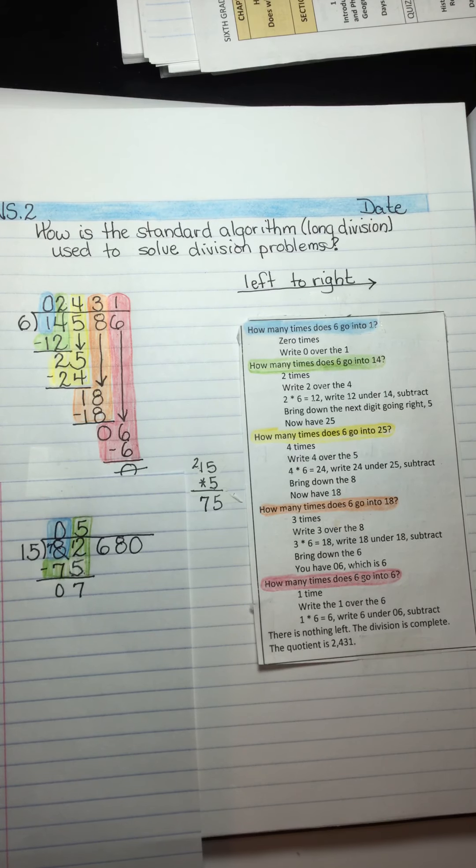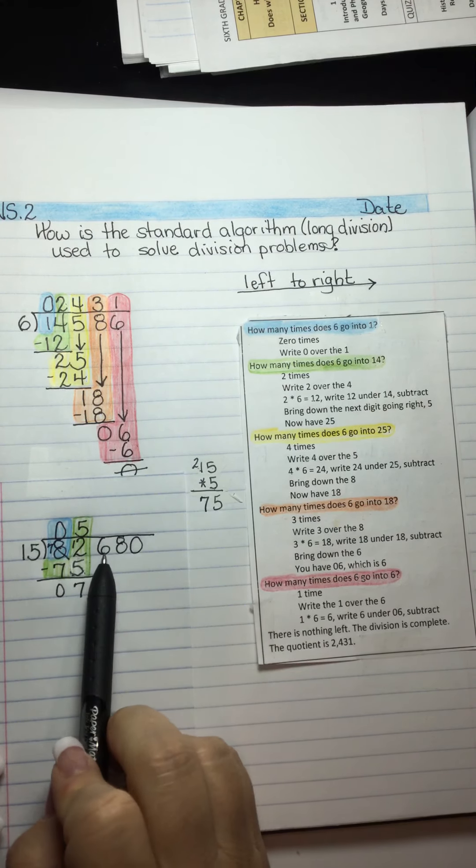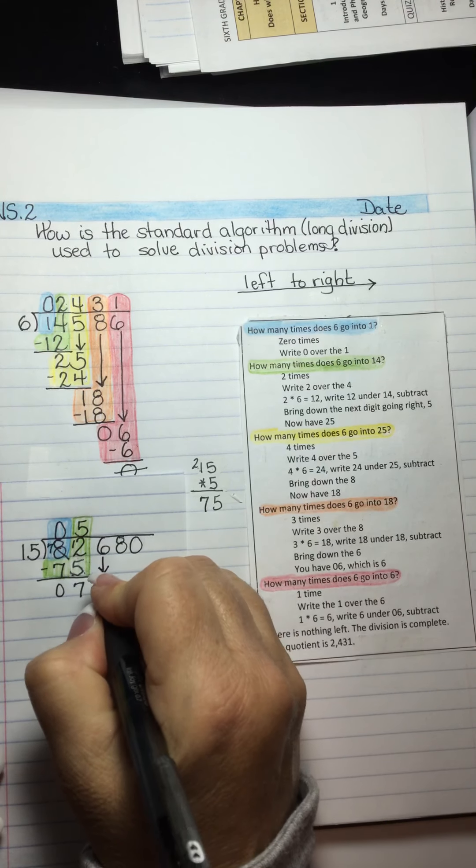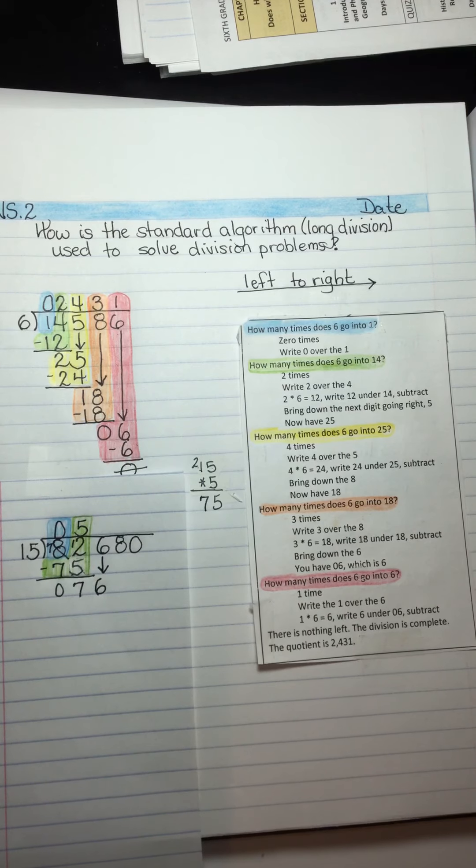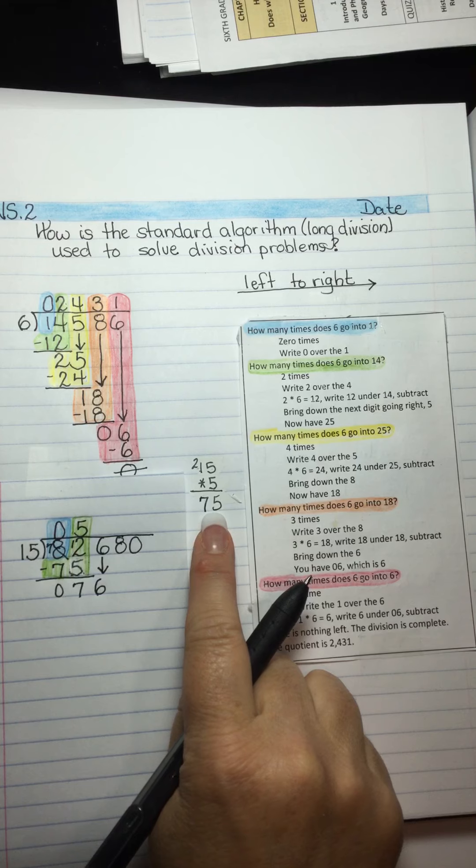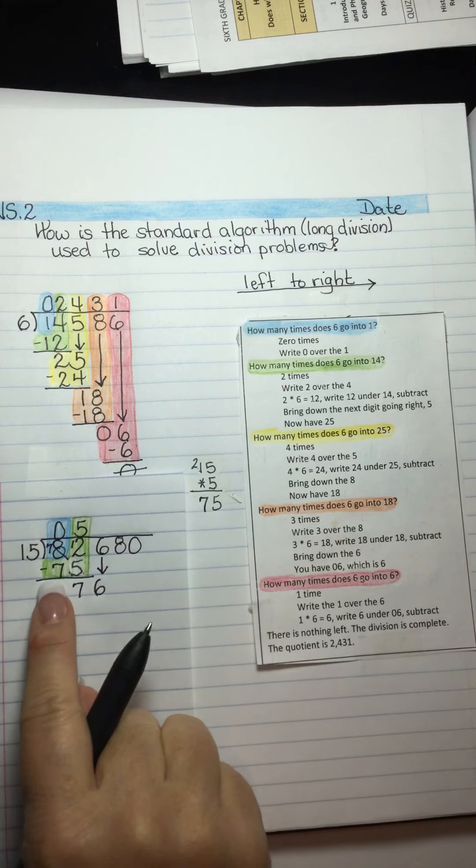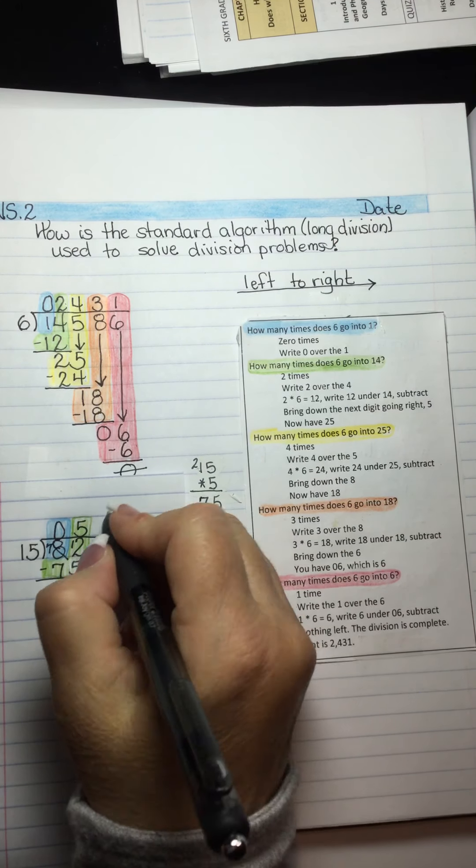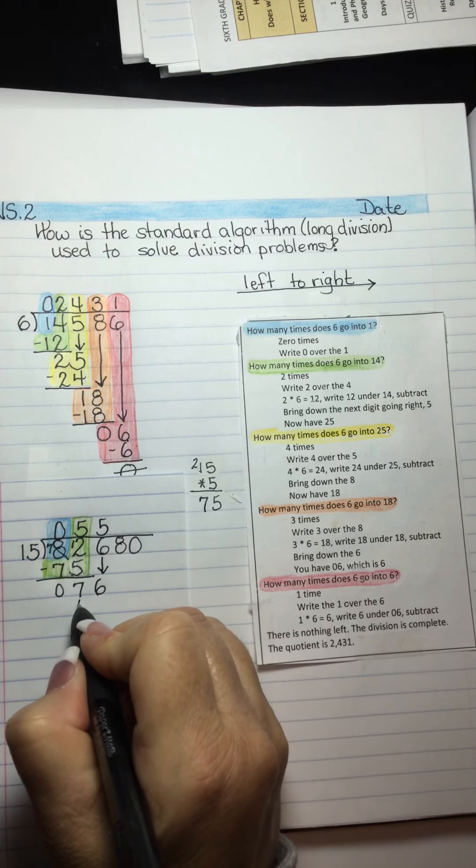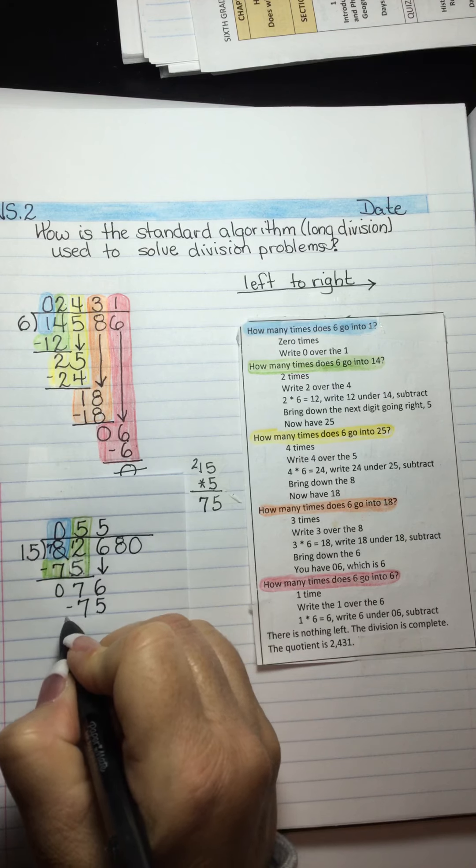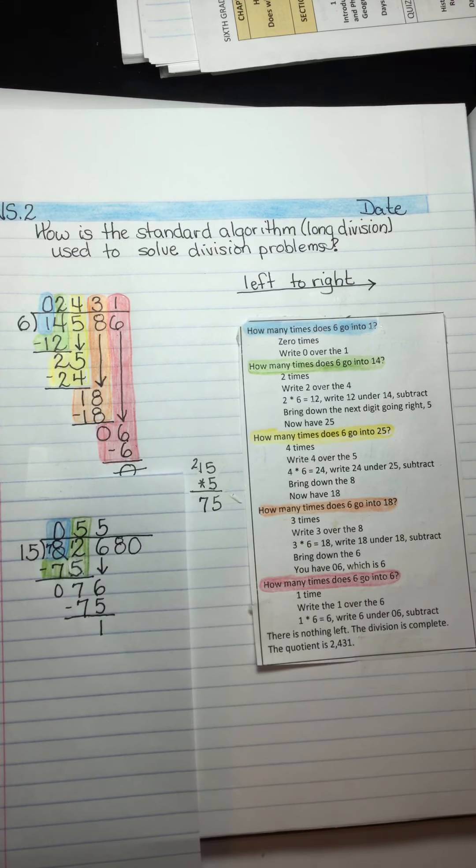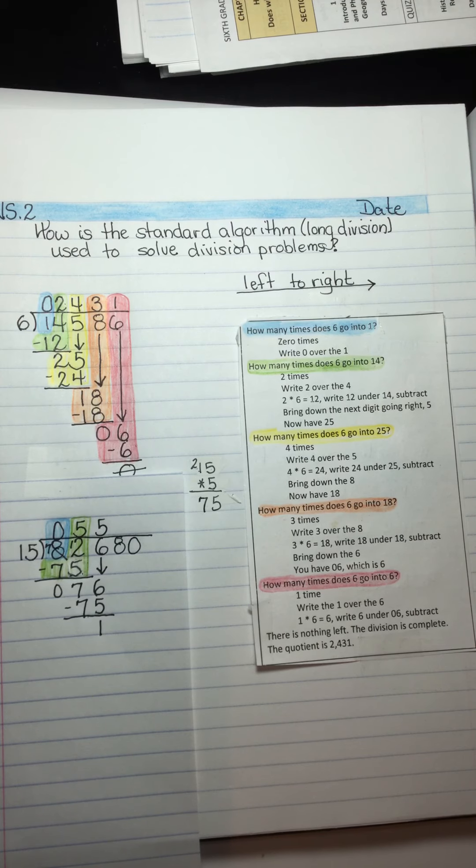And then I'm going to ask myself what the next digit is. And the next digit is 6. I'm going to bring that down. So I have 76. And if you look, we've already figured out that 15 times 5 is 75. We can use that again with the 76. So 15 times 5 is 75. Subtract that. 76 minus 75 is 1. So that's the next step.